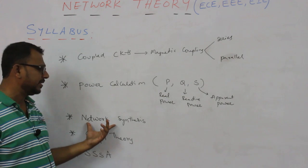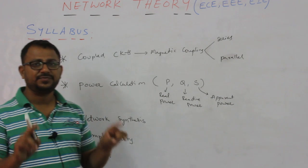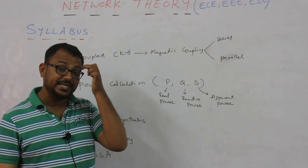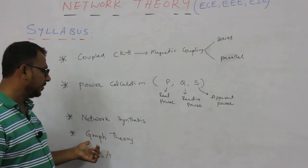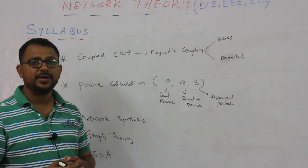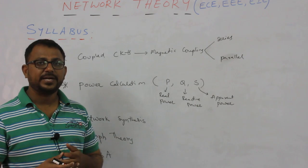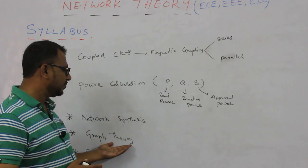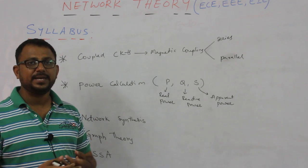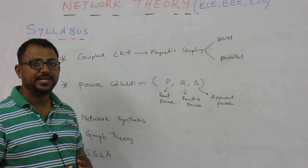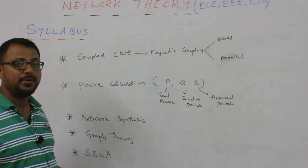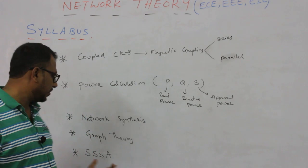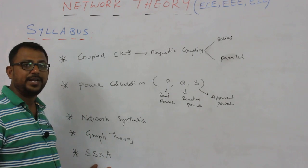Next, we are going to talk about network synthesis, where a transfer function is given and we find an equivalent circuit that produces that particular transfer function. After that, we are going to discuss graph theory, where we convert a given network into a graph and use various techniques to find the response in various elements. We will also discuss sinusoidal steady state analysis for AC transients.